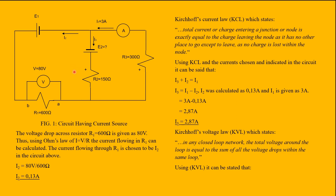We know in the circuit that the voltage drop across resistor R1, equal to 600 ohms, is given by 80 volts. Using Ohm's law, I equals V over R1, the current flowing through R1 can be calculated. This current is chosen as I2. I2 is equal to 80 volts divided by 600 ohms, which gives I2 equal to 0.13 amps.